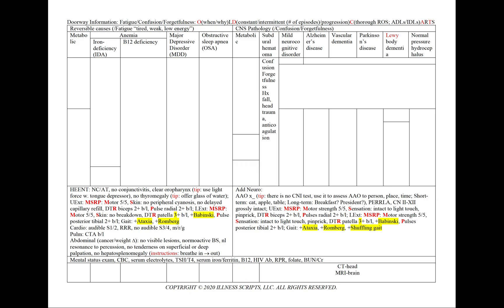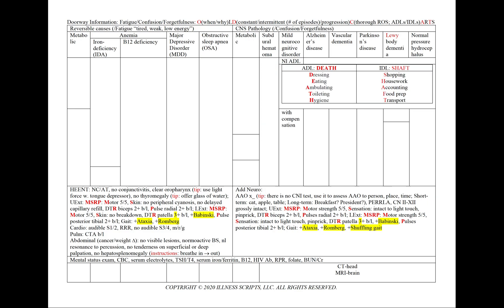In subdural hematoma, we'll see confusion and forgetfulness with a history of falls, head trauma, and anticoagulation, and we'll order a CT of the head and an MRI of the brain. Mild neurocognitive disorder will have normal ADLs with compensation. The ADLs are given by the DEATH mnemonic: dressing, eating, ambulating, toileting, and hygiene. And the IDLs by the SHAFT mnemonic: shopping, housework, accounting, food prep, and transport.